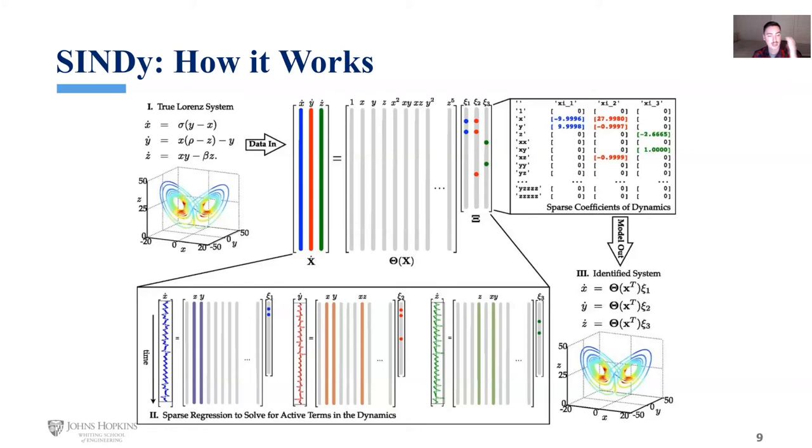And we can see first for x dot, when it's moving downwards in time, the regression is able to identify that x dot is only dependent on x and y.